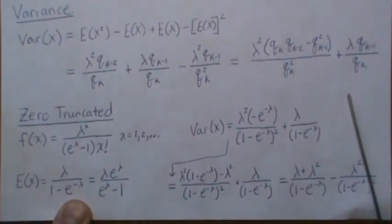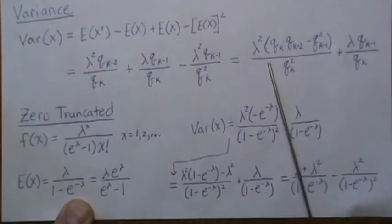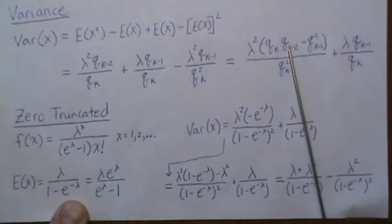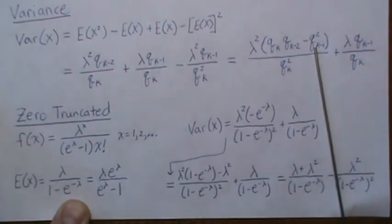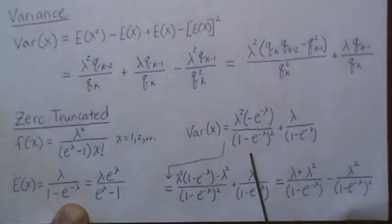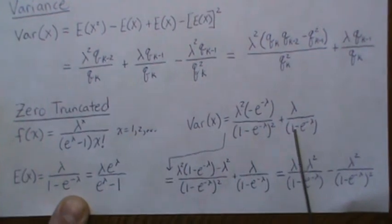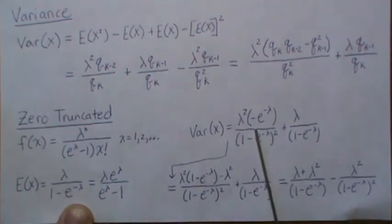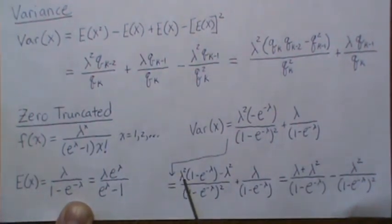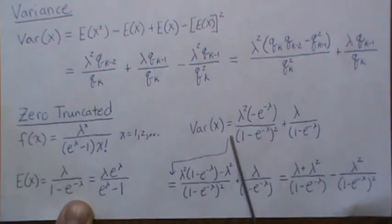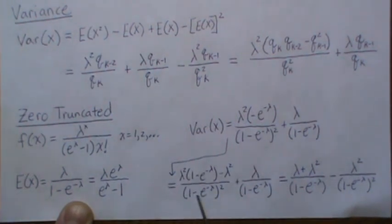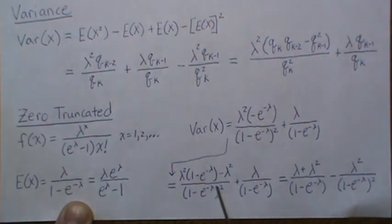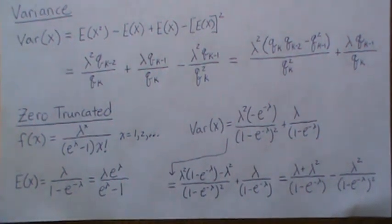The variance is a little trickier. Using our formula, we have terms with lambda and lambda squared, and the factor (1 minus e^{-lambda}). Adding a well-chosen zero — adding and subtracting lambda squared — and combining terms, the minus lambda squared over the (1 minus e^{-lambda}) squared piece gives the variance form reported in the literature.